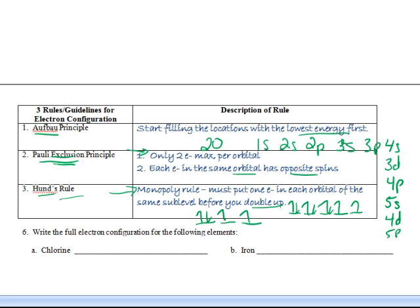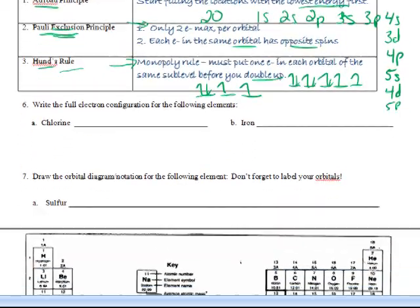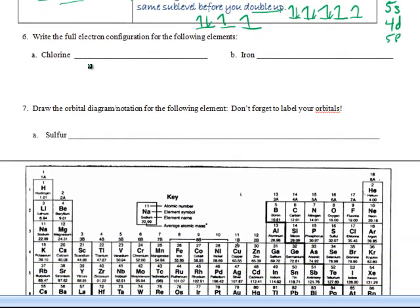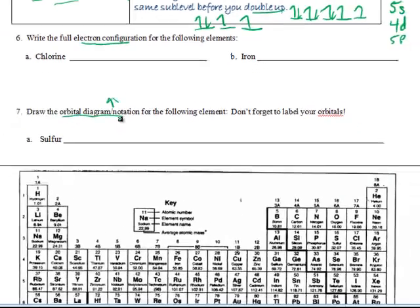All right, let's actually write some electron configurations. So when you see a problem like this, double check if it says electron configuration, you're going to be doing the 1s, 2s, and so forth. If it says orbital diagram or orbital notation, then you're going to be doing the arrows. So pay attention to what you're being asked. Don't mix it up.